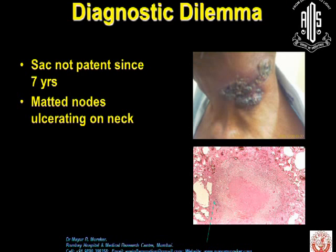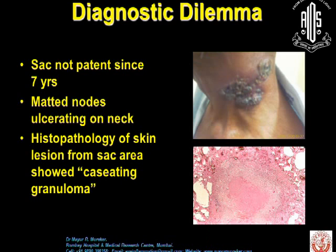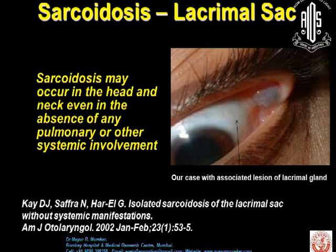We have a diagnostic case here of a patient who has a sac which has not resolved over the past seven years, with macular ulcerative nodes at the neck. This is the skin region of the lacrimal sac. This is a case of lacrimal sac drug-adorned lesion, where obviously there is no doubt that tuberculosis is playing a role. Besides tuberculosis, there is another entity: sarcoidosis of the lacrimal sac. Sarcoidosis may occur in the head and neck even in the absence of pulmonary or any other systemic involvement, and this is important because you may have isolated cases of lacrimal sac involvement without systemic manifestations.